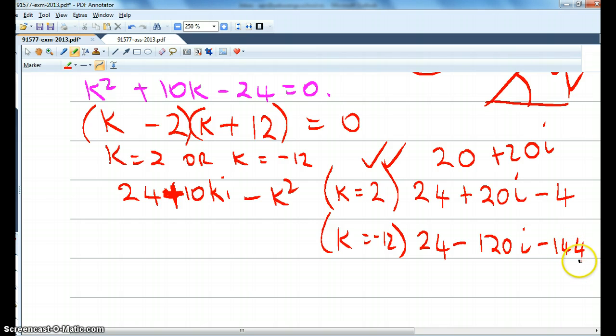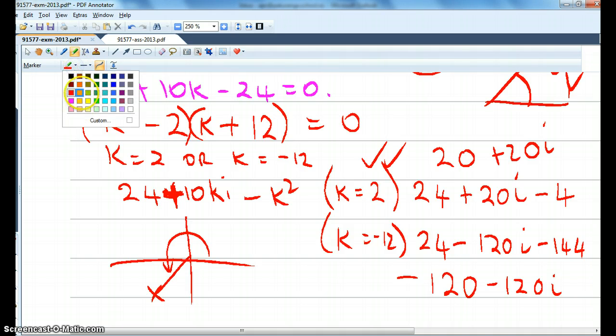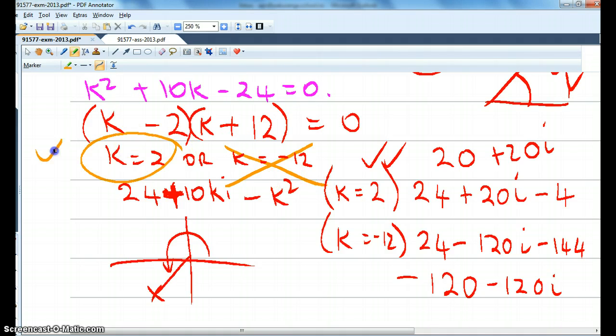So now what does that work out to be? Minus 120 minus 120i. So that would be this way. And so the argument would not be pi upon 4. So we need to very clearly say that's not going to work. And that does work.